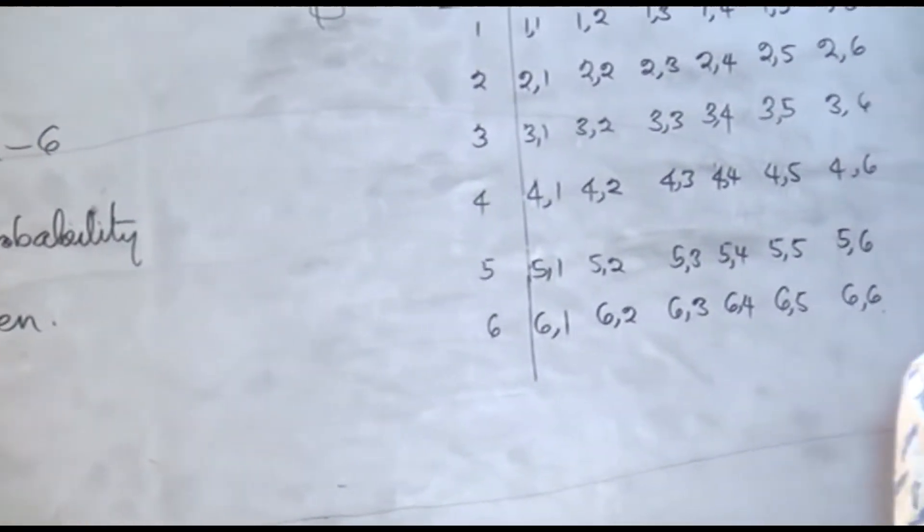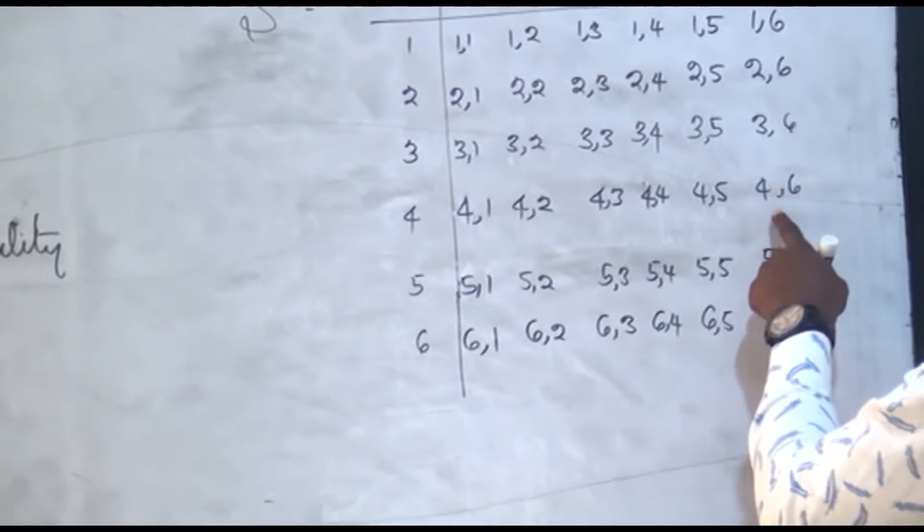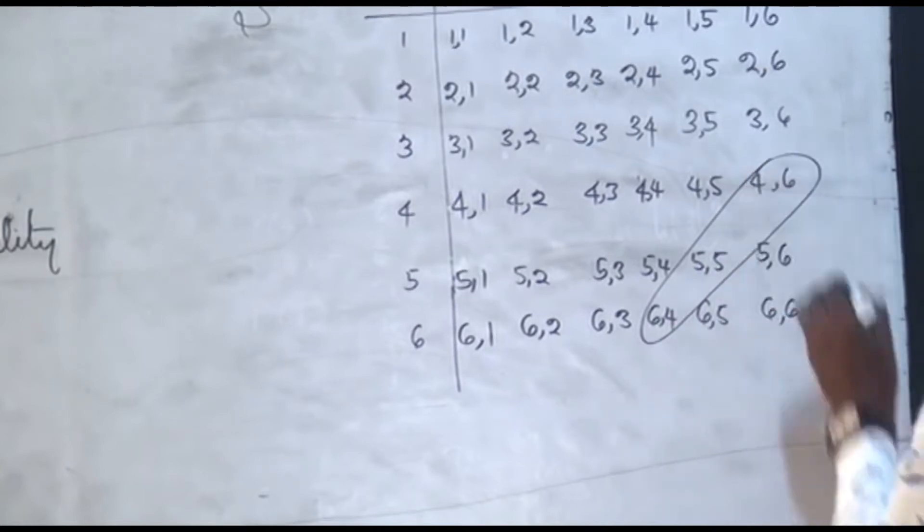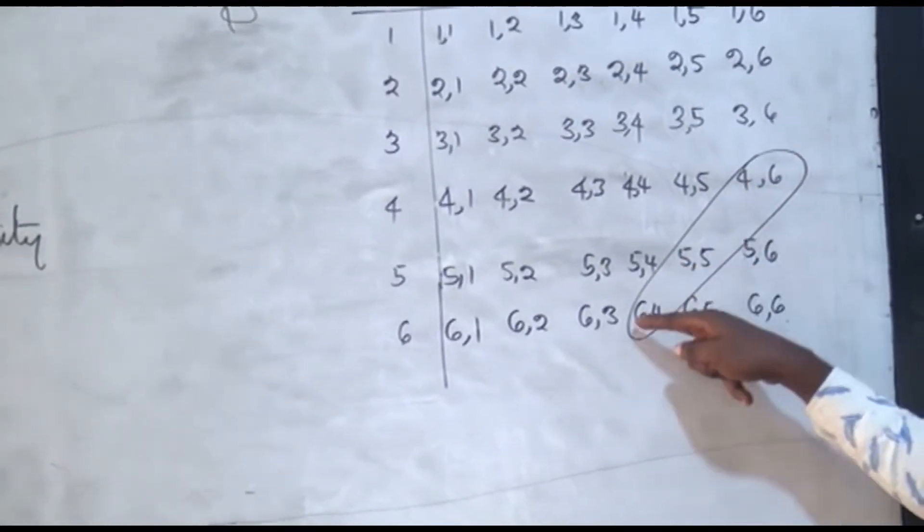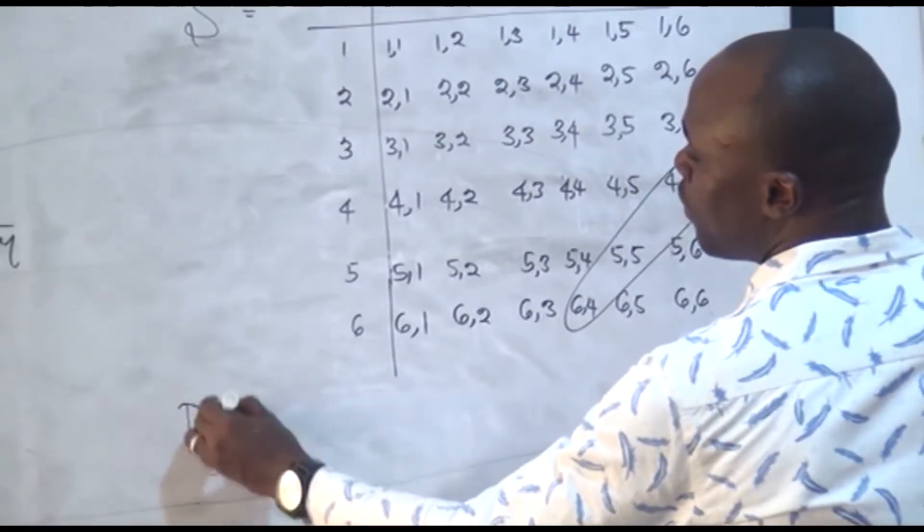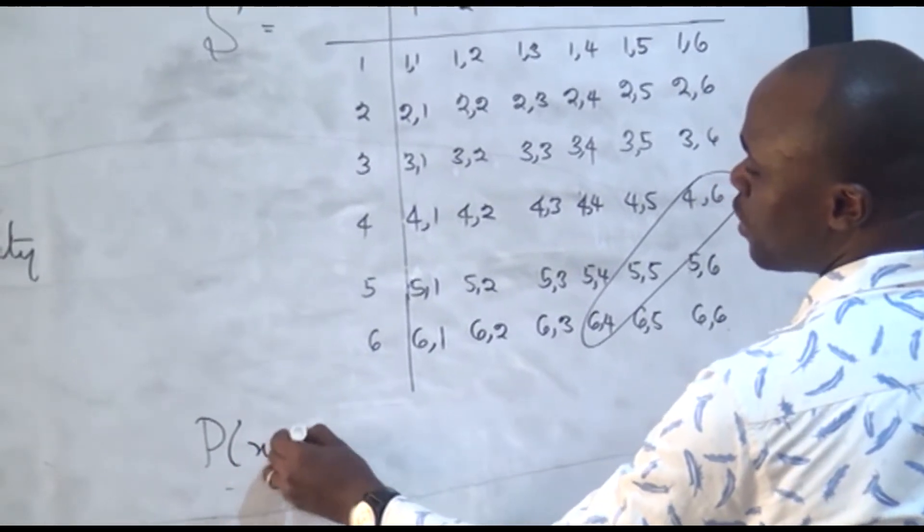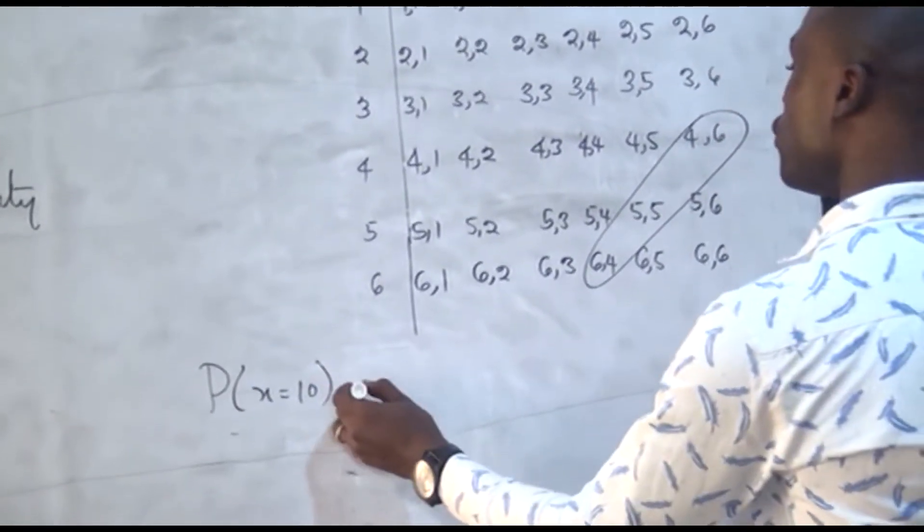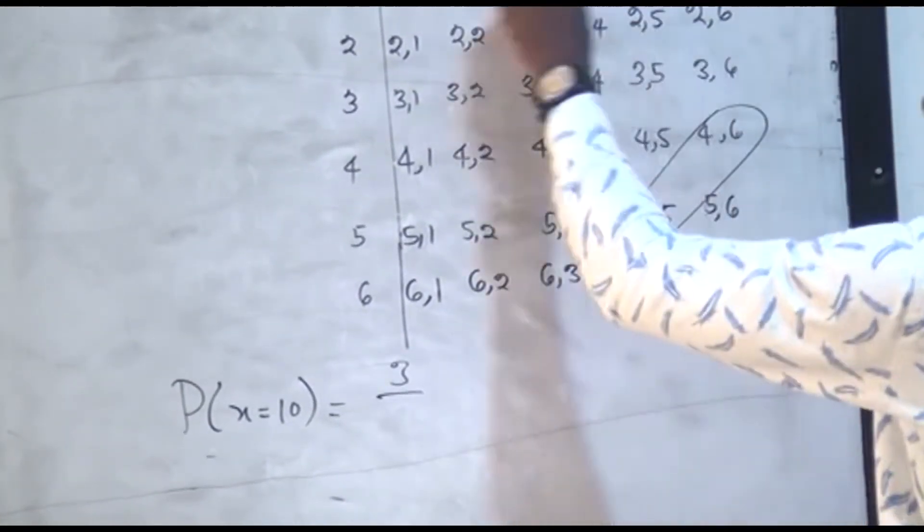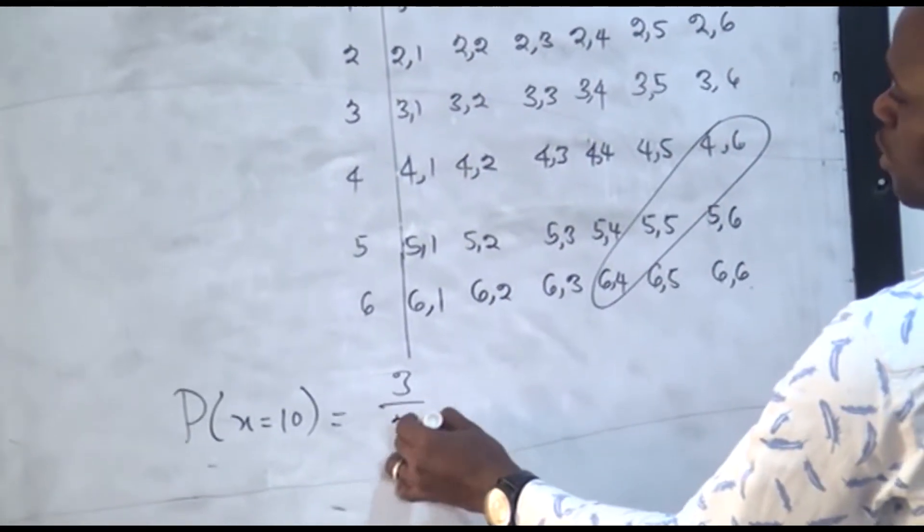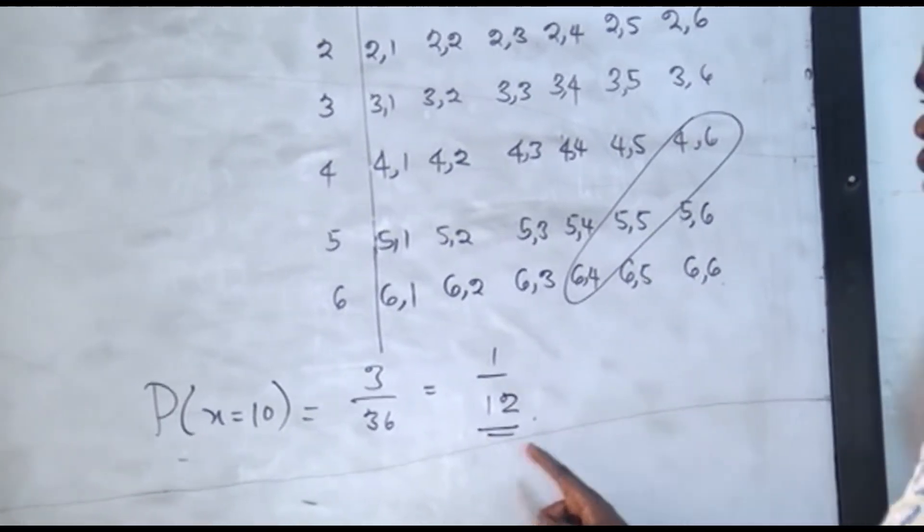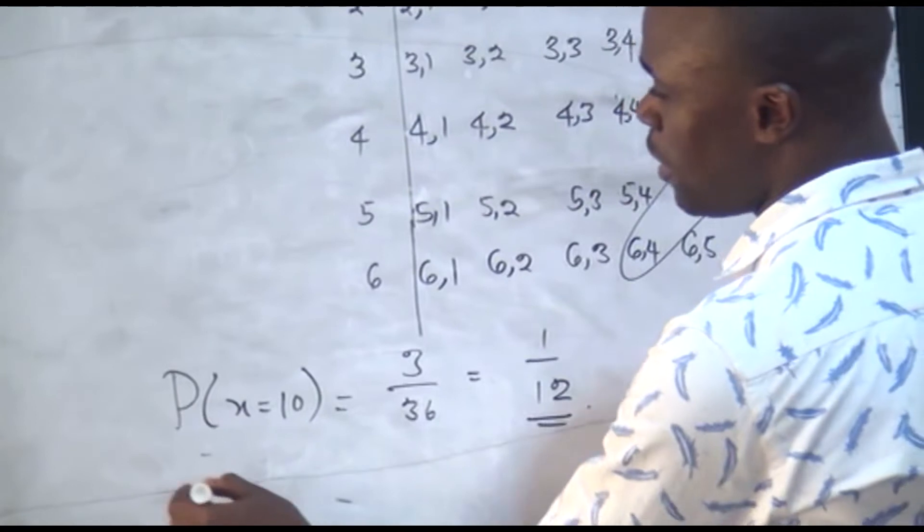And now what's the possibility of having a 10? Where do we have 10? This will give us a 10, so this is 10, this is 10. This is where you have 10, this is 10, this is 10, and this is 10—total score of 10. So you have 1, 2, 3. So the probability of having a 10, that is X equals 10, will be equals to 3 favorable outcomes over the whole of this, which is 36. So this is simply 1 over 12 as the answer.